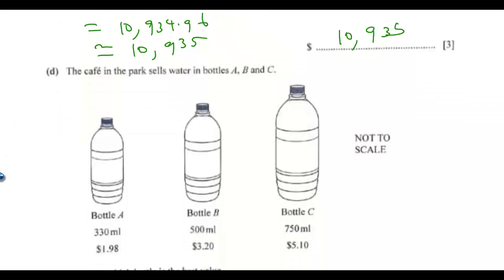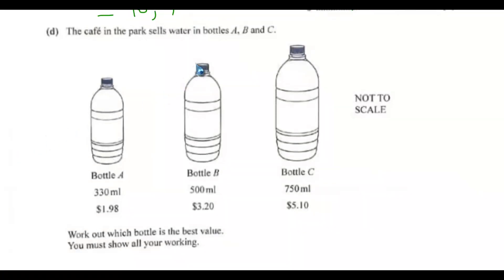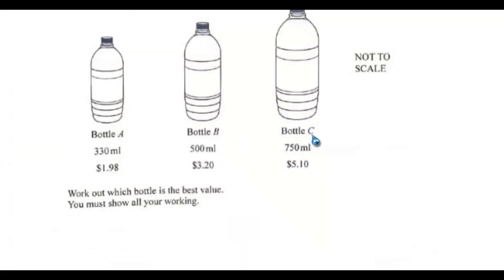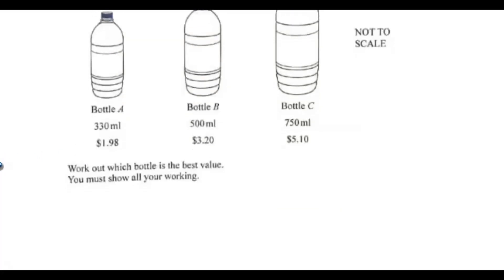Question 7D. The cafe in the park sells water in bottles A, B and C. So this is bottle A, this is bottle B, this is bottle C. So work out which bottle is the best value. You must show how you're working. So 330 ml for $1.98. And for bottle B, 500 ml for $3.2. And bottle C, 750 ml for $5.1. So what you need to do, what would be the cost price of 1 ml in each of the bottles. That will tell you the best value.